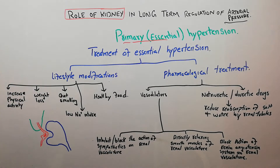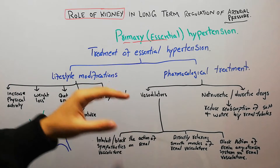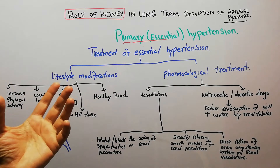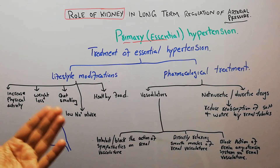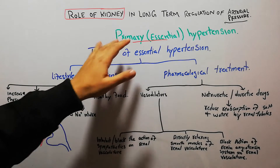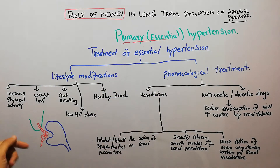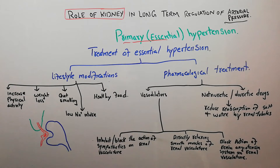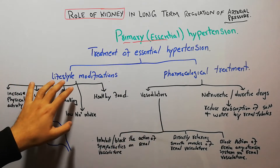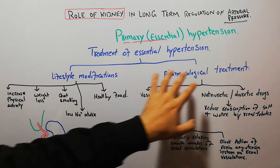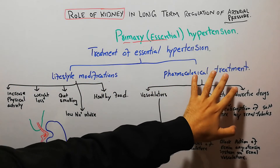By addressing those risks we can treat essential hypertension, which is the most common type — around 90 to 95% of people with hypertension have primary or essential hypertension. The treatment options are broadly classified into two categories: lifestyle modification and pharmacological treatment.